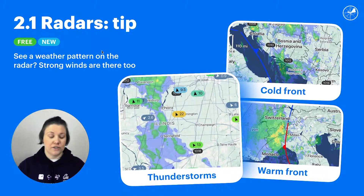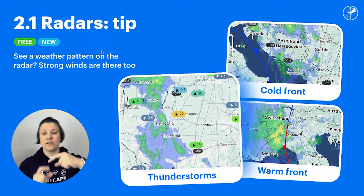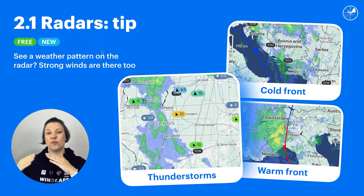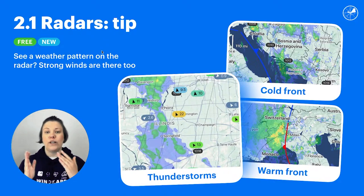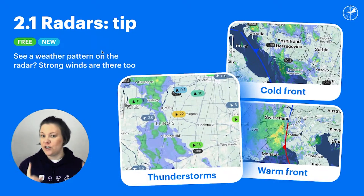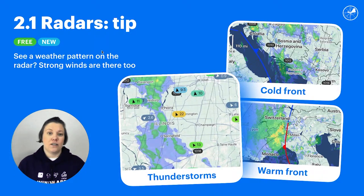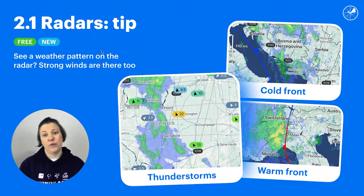For thunderstorms: significant wind, squalls, and gusts at the bottom of the cloud. For a cold front, it's usually a long thin line of precipitation and quite often thunderstorms, so very strong wind and gusts. When you see a cold front moving, you also have to know that the wind direction changes — it's like this before the front and then like this after. For the warm front, the wind will not be as crazy as for the cold front, but there is always a wind increase at the front and it's usually many hours of drizzle or rain.